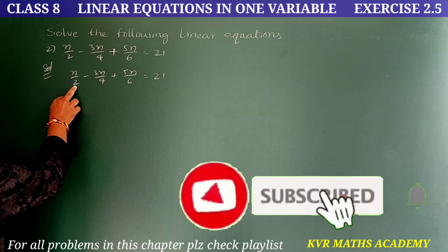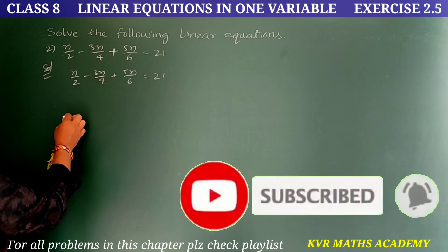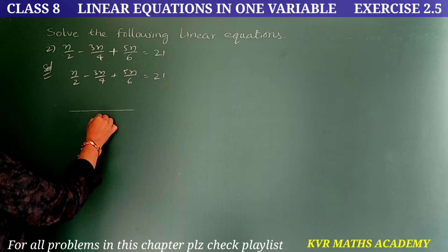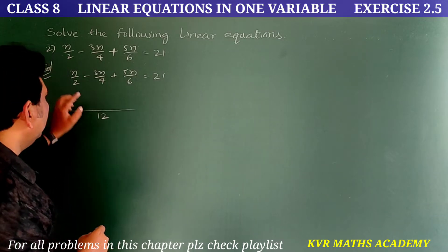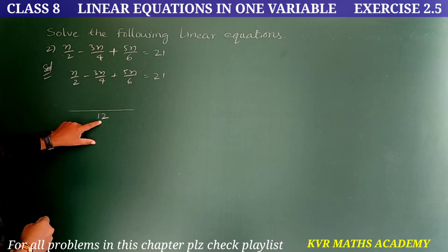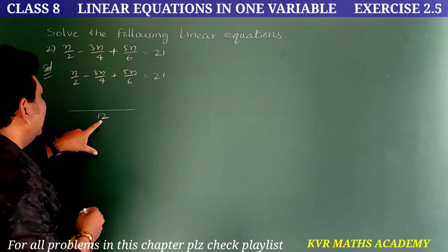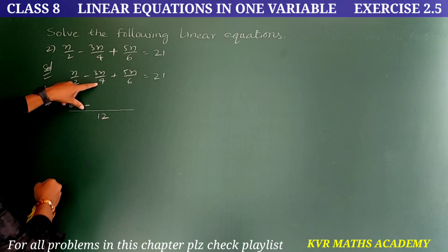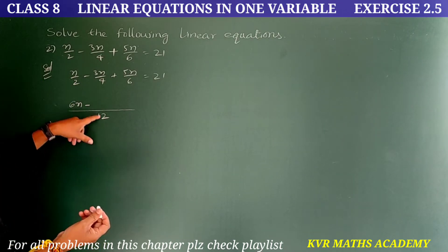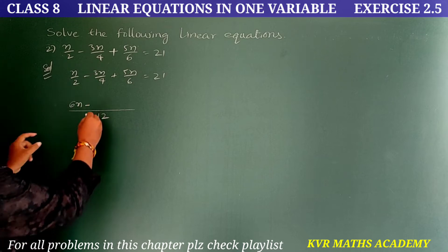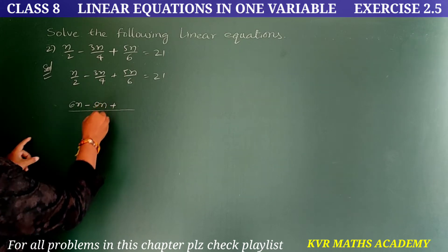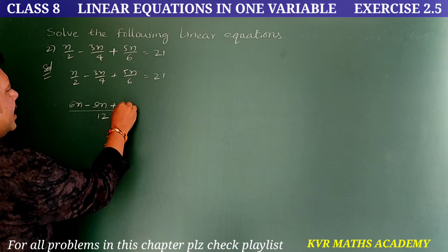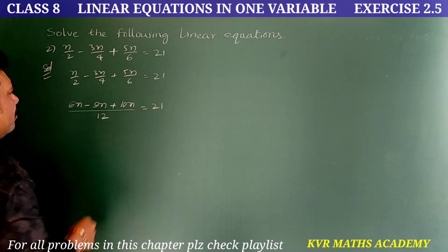Find the LCM of the denominators 2, 4, and 6, which is 12. So: 12/2 × n = 6n, minus 12/4 × 3n = 9n, plus 12/6 × 5n = 10n, equals 21 × 12.